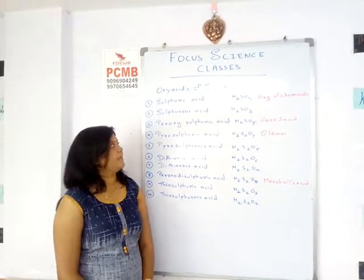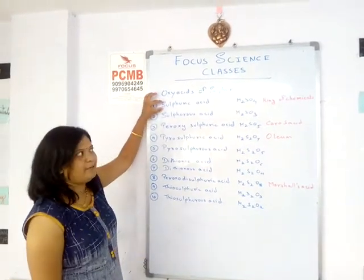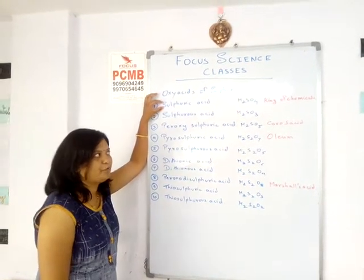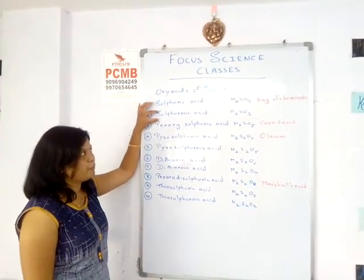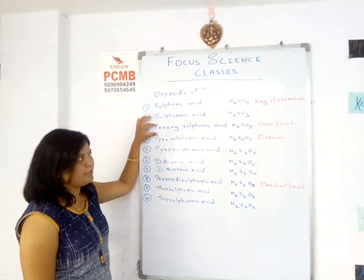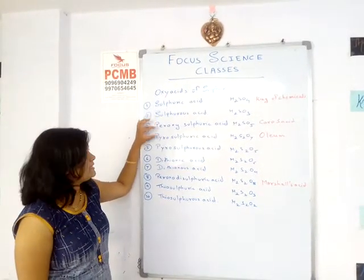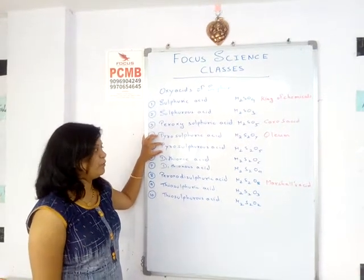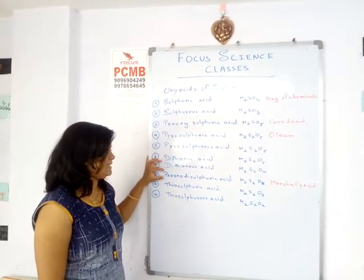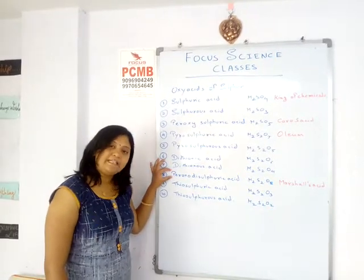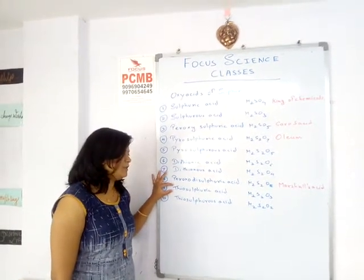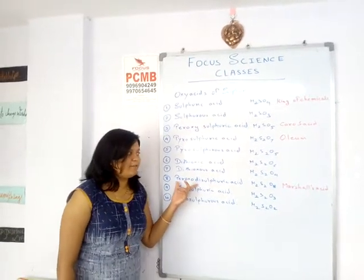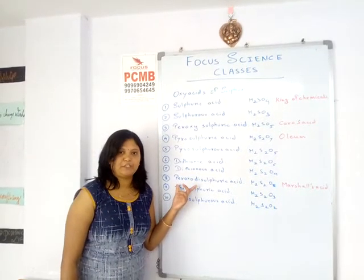Sulfur is also known as the king of chemicals. The oxy acids of sulfur include: sulfuric acid, king of chemicals; sulfurous acid; peroxysulfuric acid, also known as Caro's acid; pyrosulfuric acid, also known as oleum; pyrosulfurous acid; dithionic acid; dithionous acid; peroxodisulfuric acid, also known as Marshall's acid; thiosulfuric acid; and thiosulfurous acid.